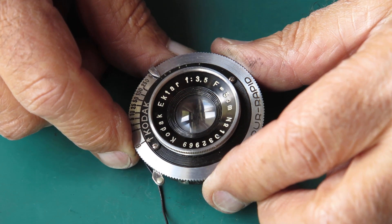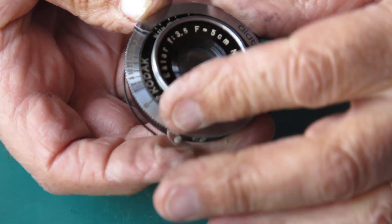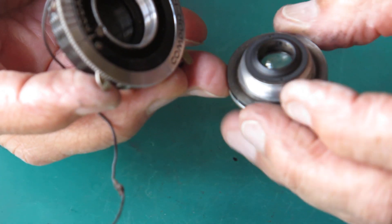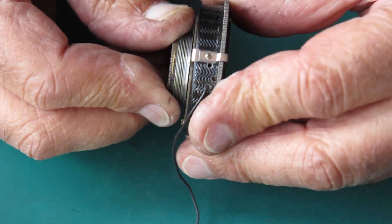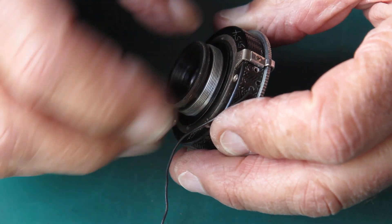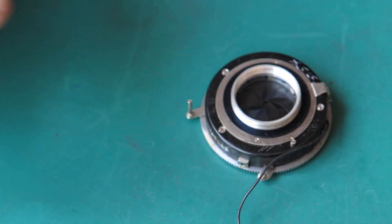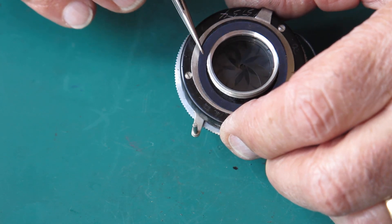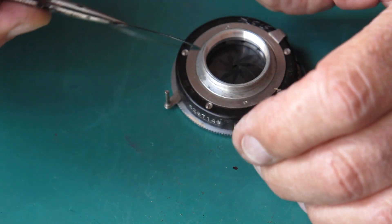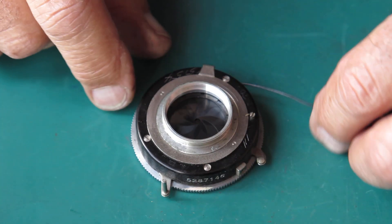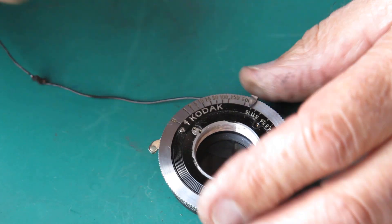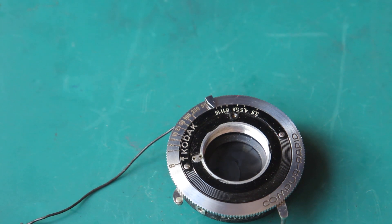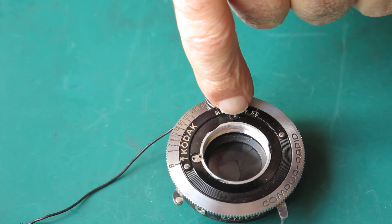Well here's a shutter, it's got the Ektar f3.5 lens. Remove the rear group. There's a couple of shims here, a paper shim and a metal shim. Okay. Oh wonder when this was last serviced, we're about to find out. Screw missing there.